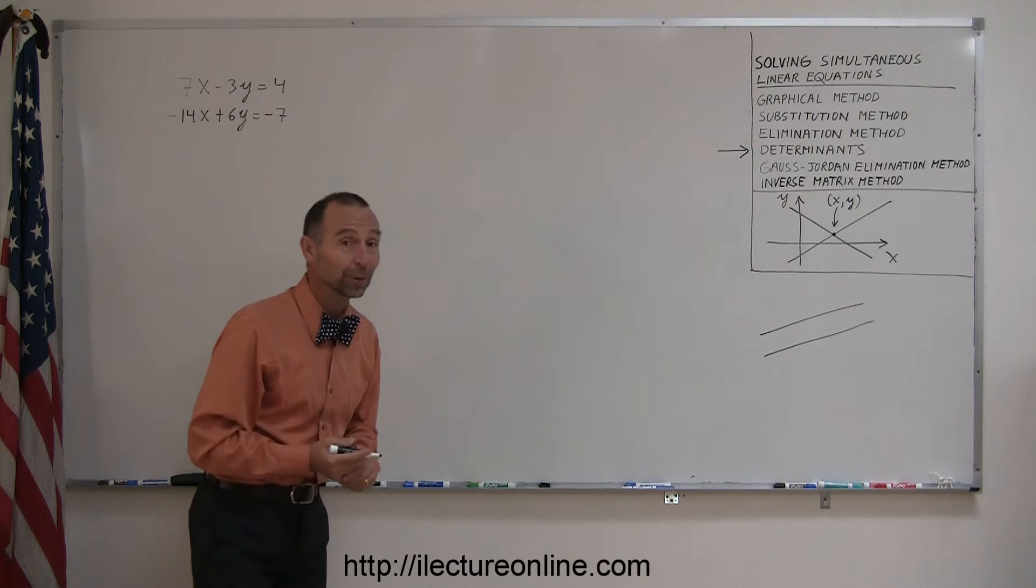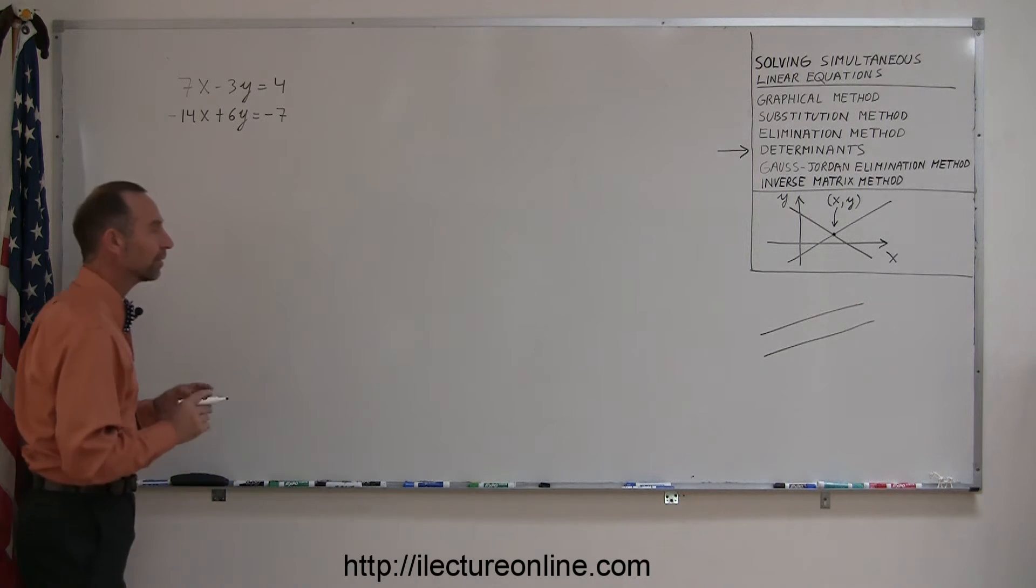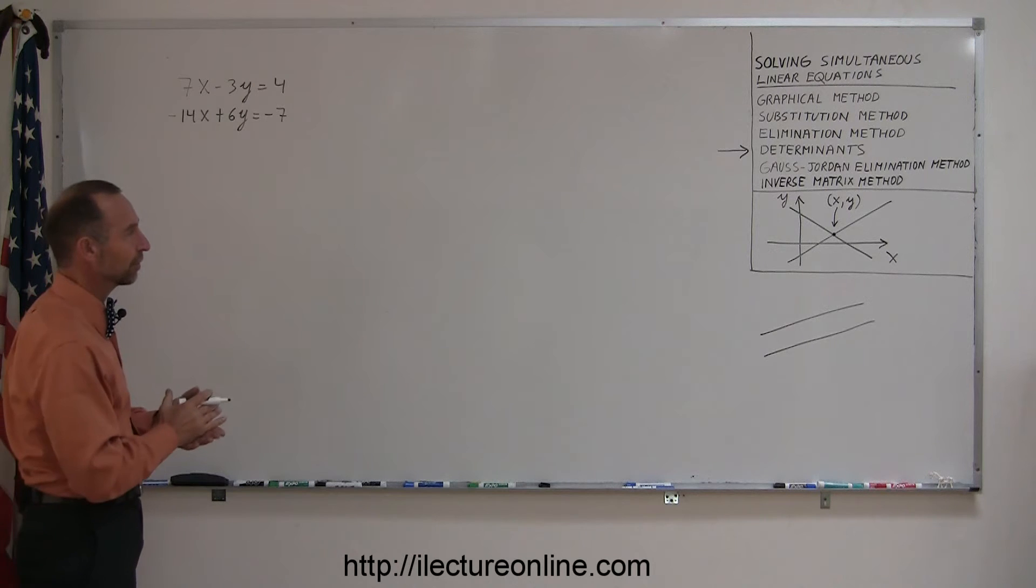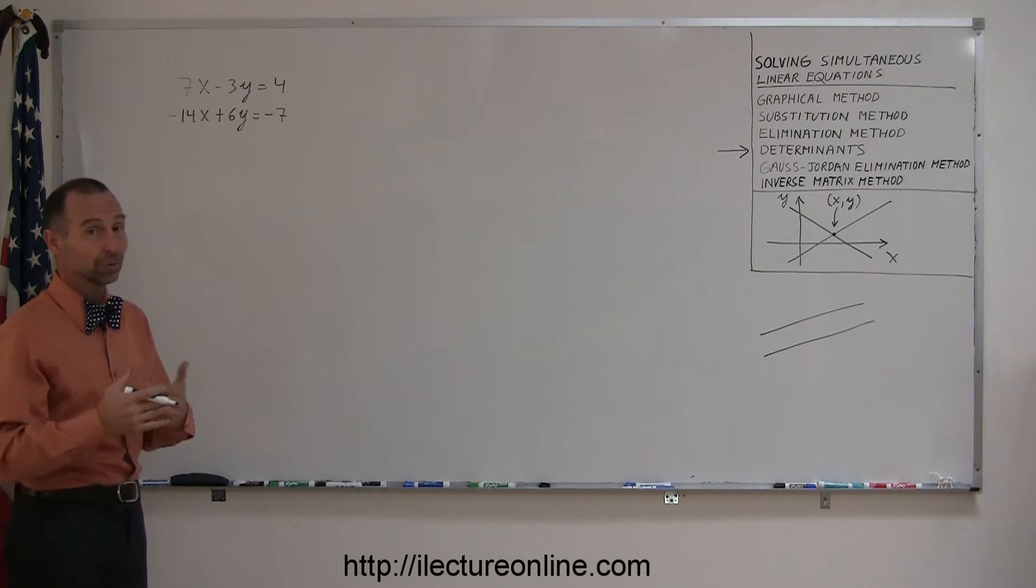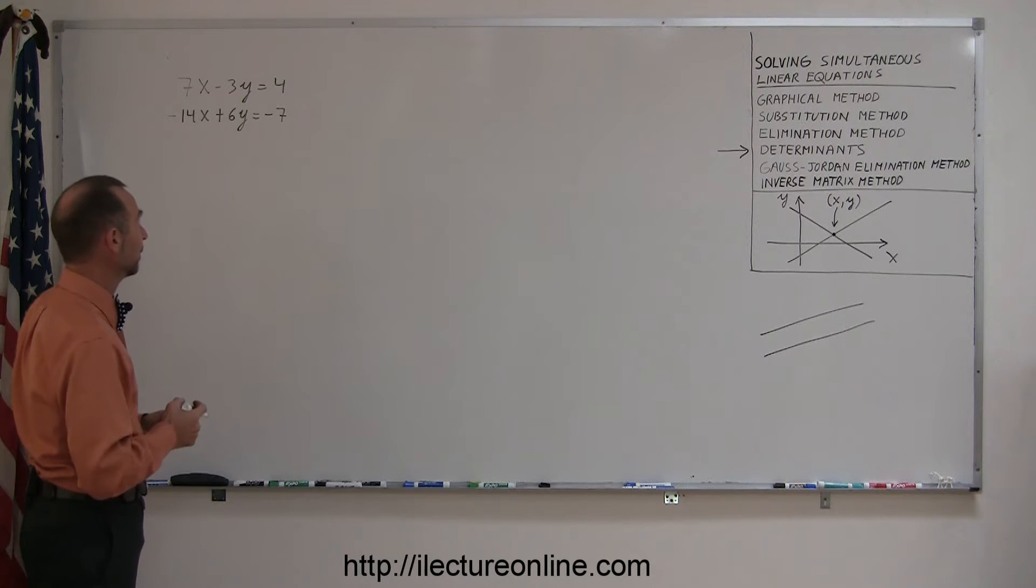Here's an example where we're going to run into a case like this. But to illustrate how we use the method of determinants, we'll go ahead and assume we don't know that yet. First, we'll look at it, and it's already in the correct form, the x and y on the left side, the constants on the right side, so we're ready to go.